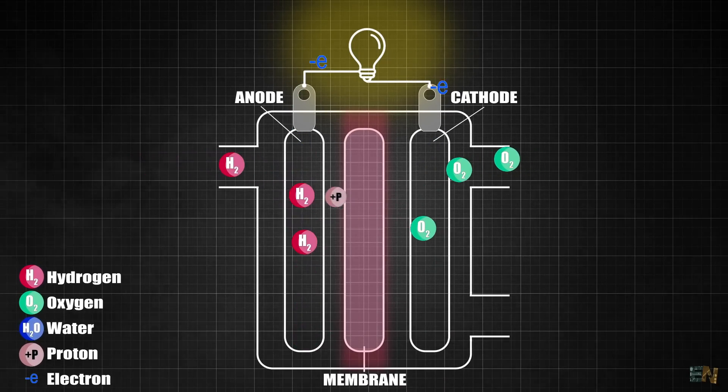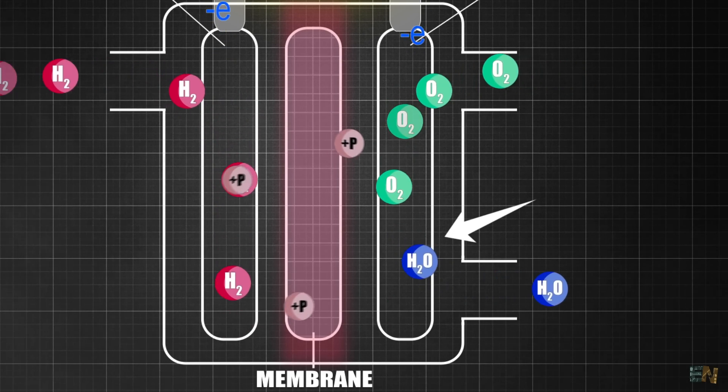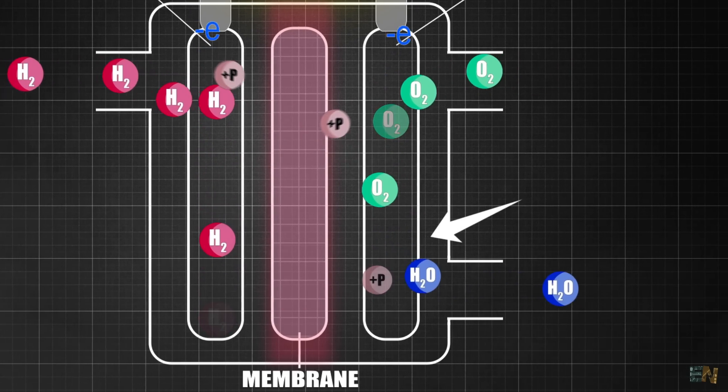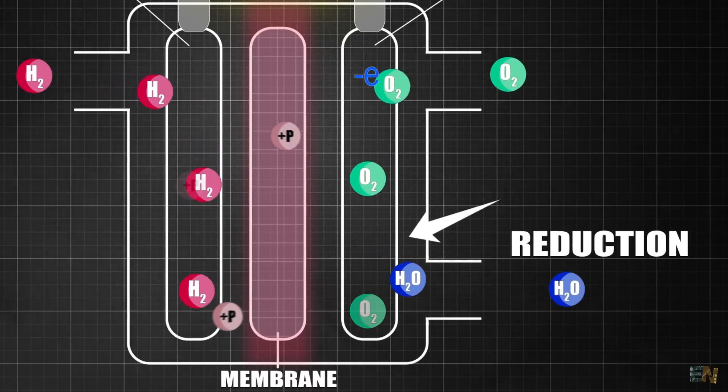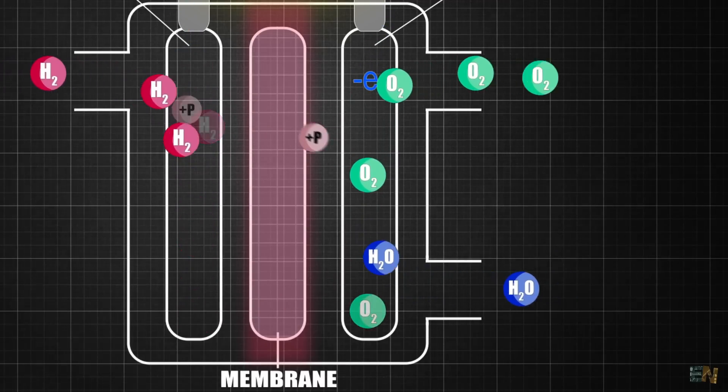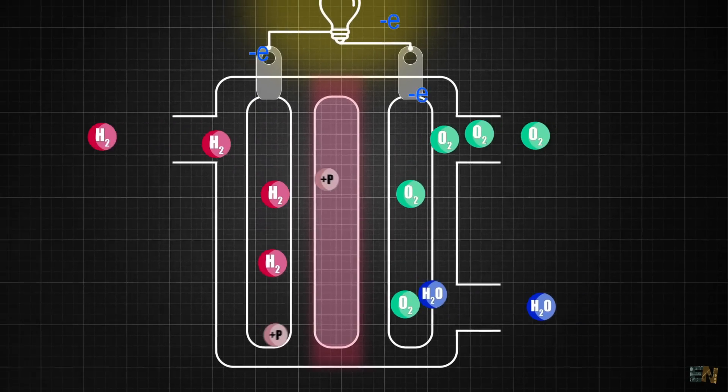And meanwhile, at the cathode, the oxygen molecules react with the protons and the electrons that had travelled through the external circuit from the anode. And this process is called reduction and produces water or H2O and releases additional electrons.